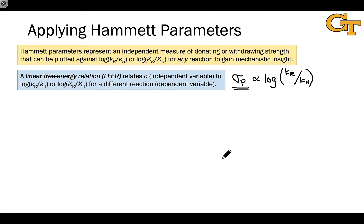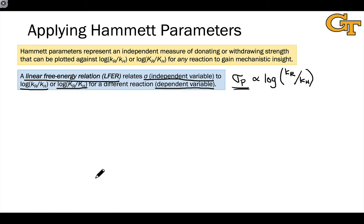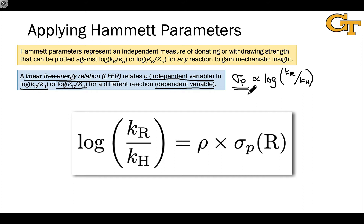This correlation is highly useful and gives us great mechanistic insight. The relationship between sigma_p — or more generally any sigma parameter — as the independent variable, and the logarithm of a ratio of rate constants or equilibrium constants as the dependent variable, is exactly what's known as a linear free energy relation, or LFER. It's linear because there is some constant of proportionality multiplying sigma_p that equals the logarithm of the ratio.